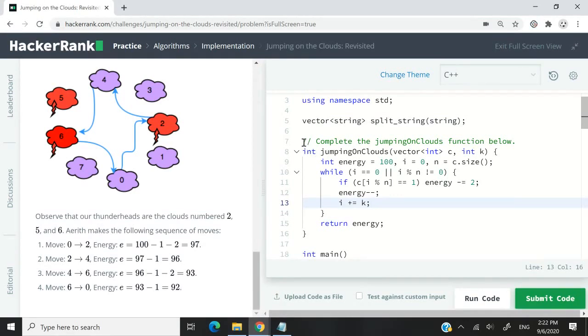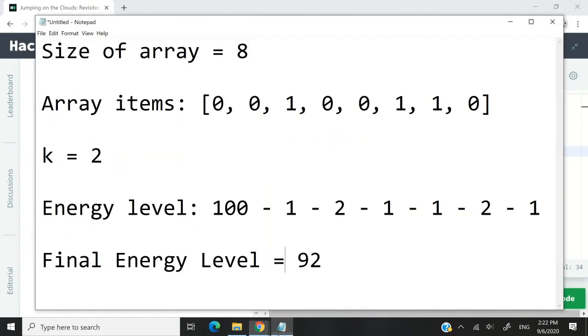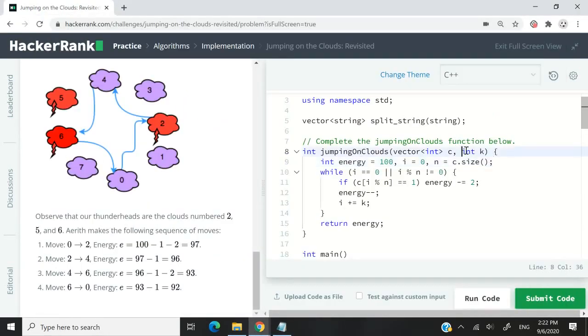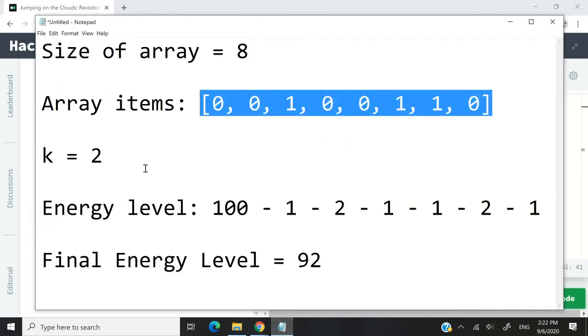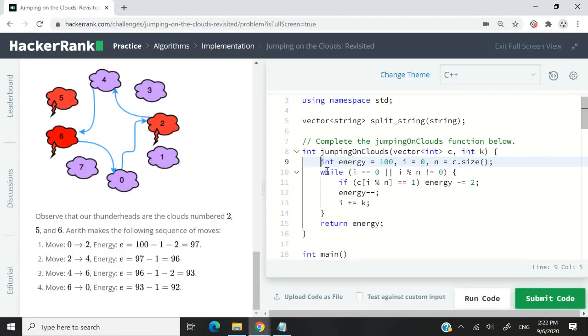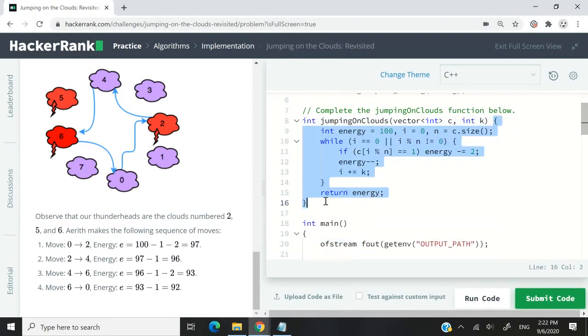So now let's move into the code. And this is what we have. This here is the solution. So this function is called jumping on the clouds. The function signature is already provided. We have a vector of integers called c, which is our array of clouds. So it will be this one here. And then we have an integer parameter called k. So k is what we've been using all the while. What you see in between here, in between these two curly braces, is my function definition. I have my initial levels of energy at 100. And then I'm also using this i variable as an integer, and I'm setting that to zero because I want this to help me traverse my array.